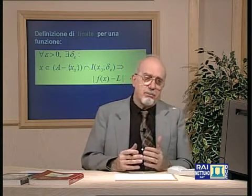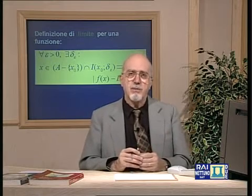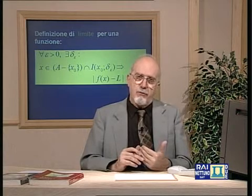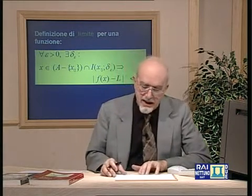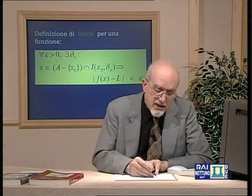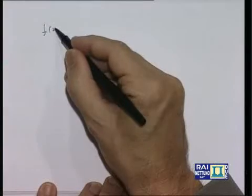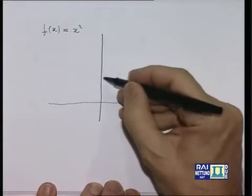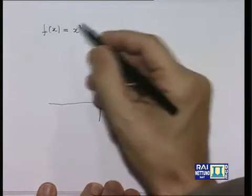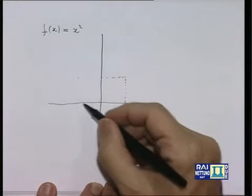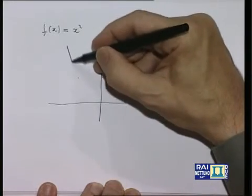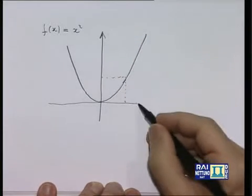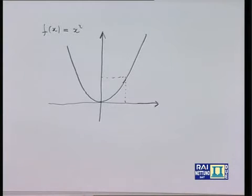Prima della definizione formale, consideriamo un esempio chiarificatore. Prendiamo la funzione f(x) = x², il cui grafico è una parabola passante per (−1,1), l'origine e (1,1). Prendiamo x₀ = 1 e un secondo punto x distinto da 1. Sulla parabola abbiamo il punto (1,1) = (x₀, f(x₀)) e il punto (x, x²) = (x, f(x)).